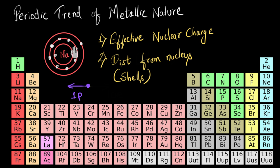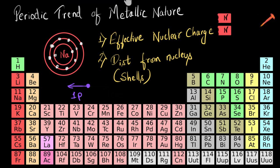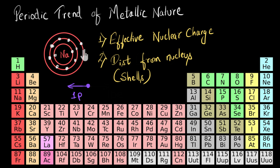Now let's talk about the distance from the nucleus. If the electron is closer to the nucleus, the force it experiences is going to be stronger. Whereas if the electron is farther away, the force is going to be slightly weaker — just like with magnets, if you take the magnet farther away, the pulling force reduces. The distance from the nucleus is related to the number of shells in which the electron resides. Generally, if the electron is in a higher shell, it will be farther away from the nucleus.